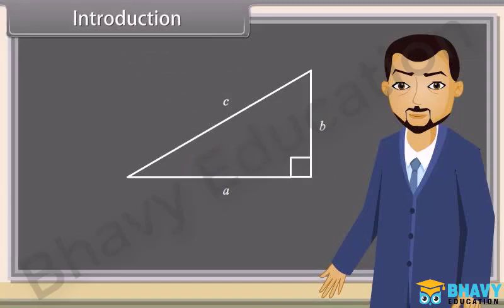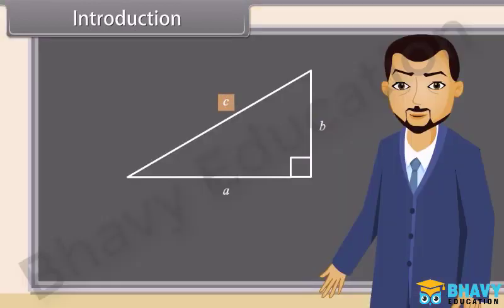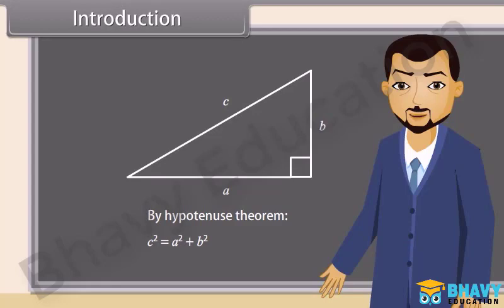Students, this is a right-angled triangle. Can you tell which side is the hypotenuse? C! C is the hypotenuse. Yes, C is the hypotenuse. So by the Pythagorean theorem, C squared is equal to A squared plus B squared. We will prove some trigonometric identities.